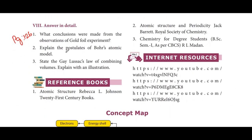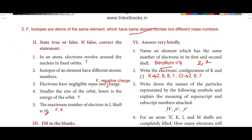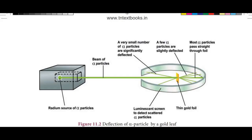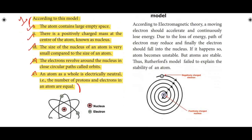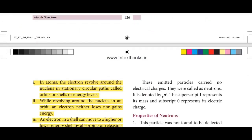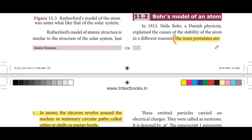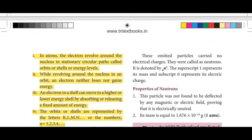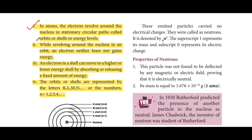Second: Explain the postulates of Bohr's Atomic Model. Refer to page number 126 in the textbook. The main postulates are four in number — read them from the textbook.